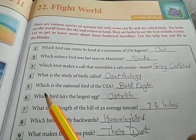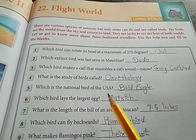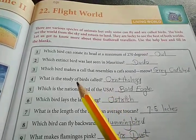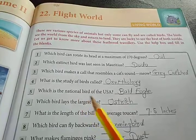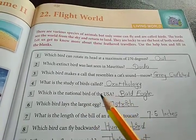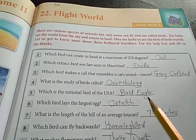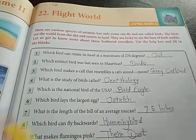Then fifth question: which bird is the national bird of the USA? USA means America. The full form of USA is United States of America and the national bird of USA is bald eagle. Sixth question: which bird lays the largest egg?